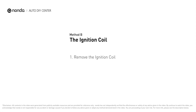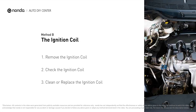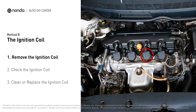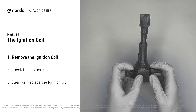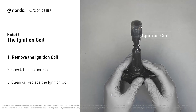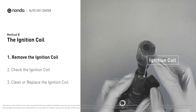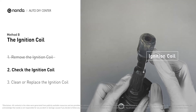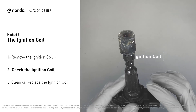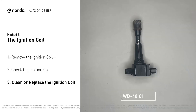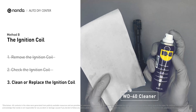Ignition coils are usually installed directly at the cylinder head, above the spark plug. First, carefully remove the ignition coil from the engine. Check to see if the ignition coil is either stained or damaged.